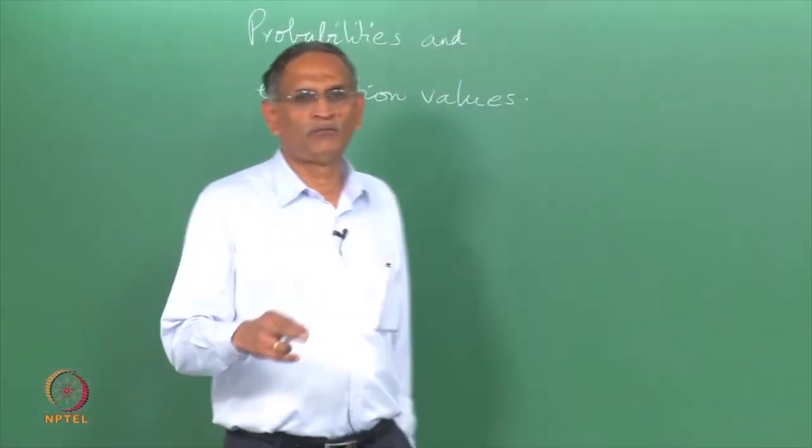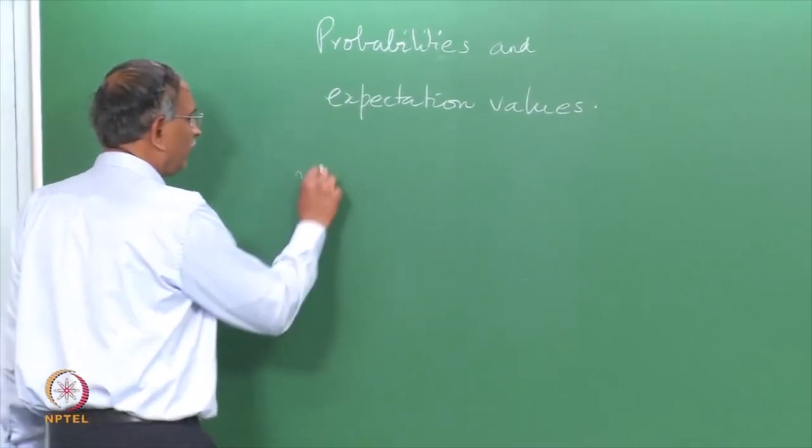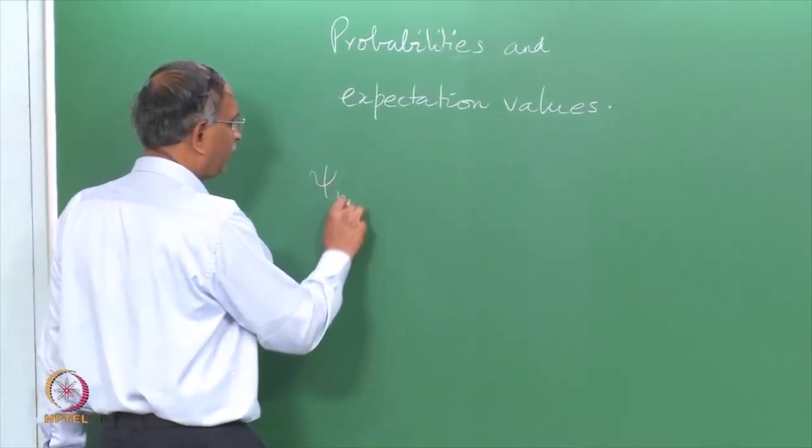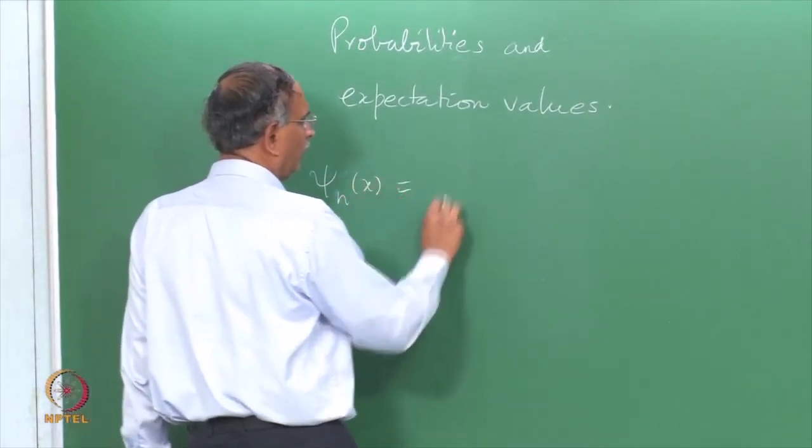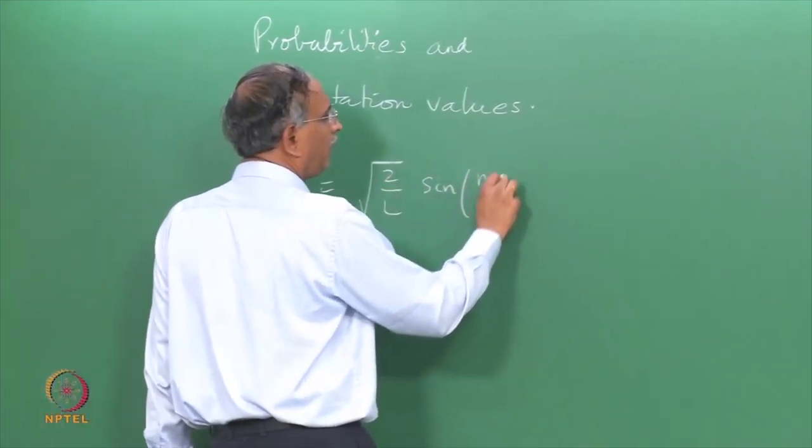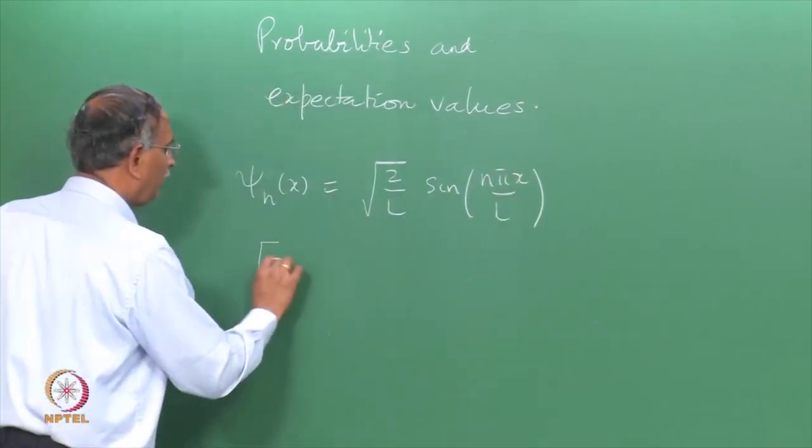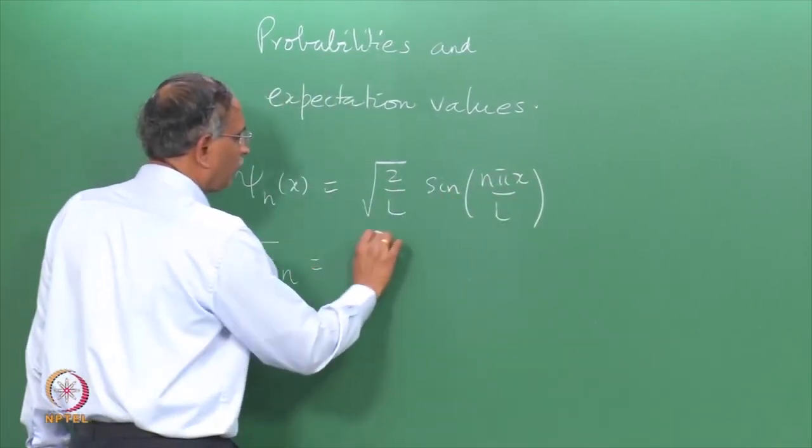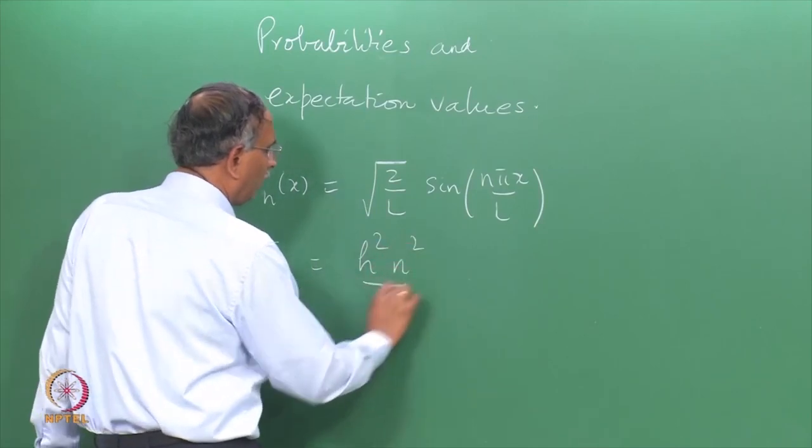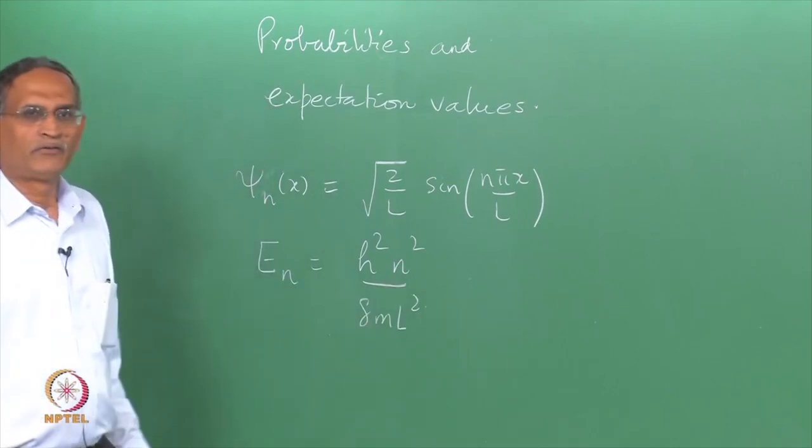Let us continue from where we left, namely the wave function psi n of x as root 2 by l sin n pi x by l and the energy E n as h square n square by 8 m l square.